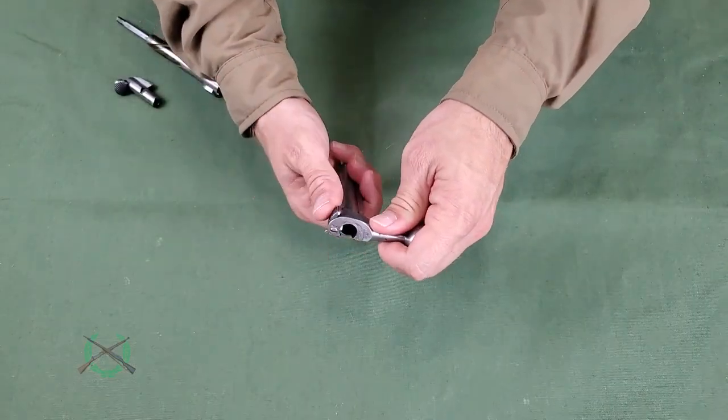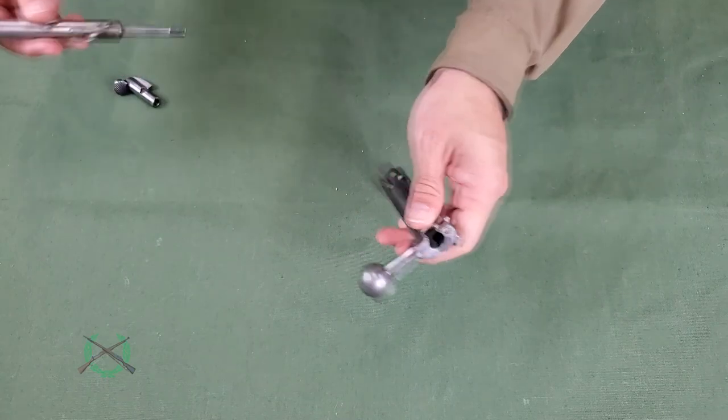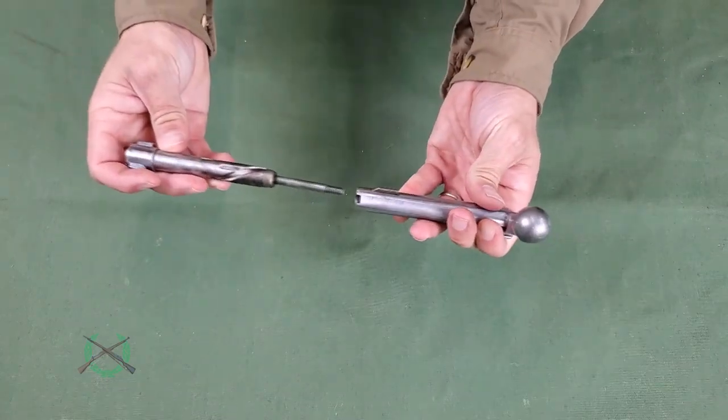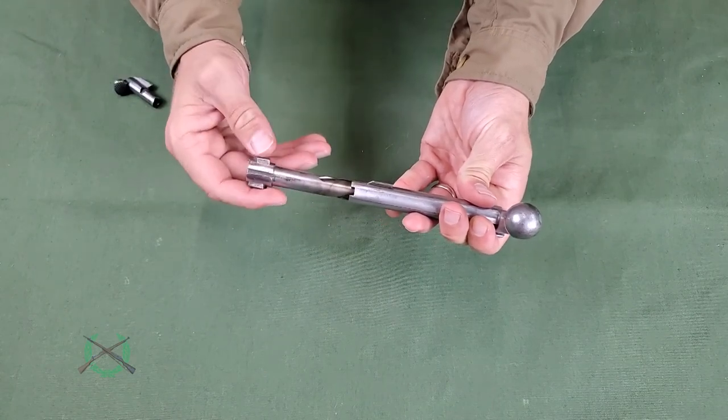Ensuring the safety is in the on position, insert the bolt head into the bolt body with the ejector groove facing the bolt handle until it starts to rotate.